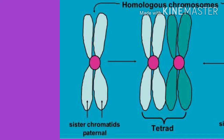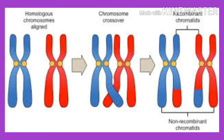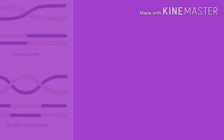The bivalent is called a tetrad and each chromosome is called a dyad. Non-sister chromatids of a homologous pair develop recombination nodules and exchange their parts — this is crossing over. Non-sister chromatids reunite after exchanging their parts.